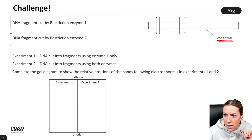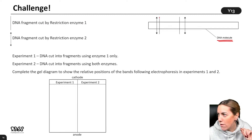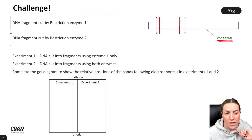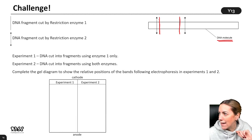So DNA fragment cut by restriction enzyme one is marked with a straight line. Let's go over it in colour. Restriction enzyme one is going to cut the DNA here and here. Restriction enzyme two is cutting where you've got arrow heads. Let's go over those in blue so we can see them. So that's restriction enzyme two.